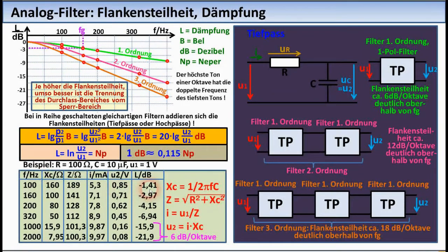By applying the formulas, one arrives at the individual values here in the table. You can see that initially the attenuation is still very small and also increases very little. And only when the frequency is well above the cutoff frequency, like here for example, these two values 1000 and 2000 Hertz.